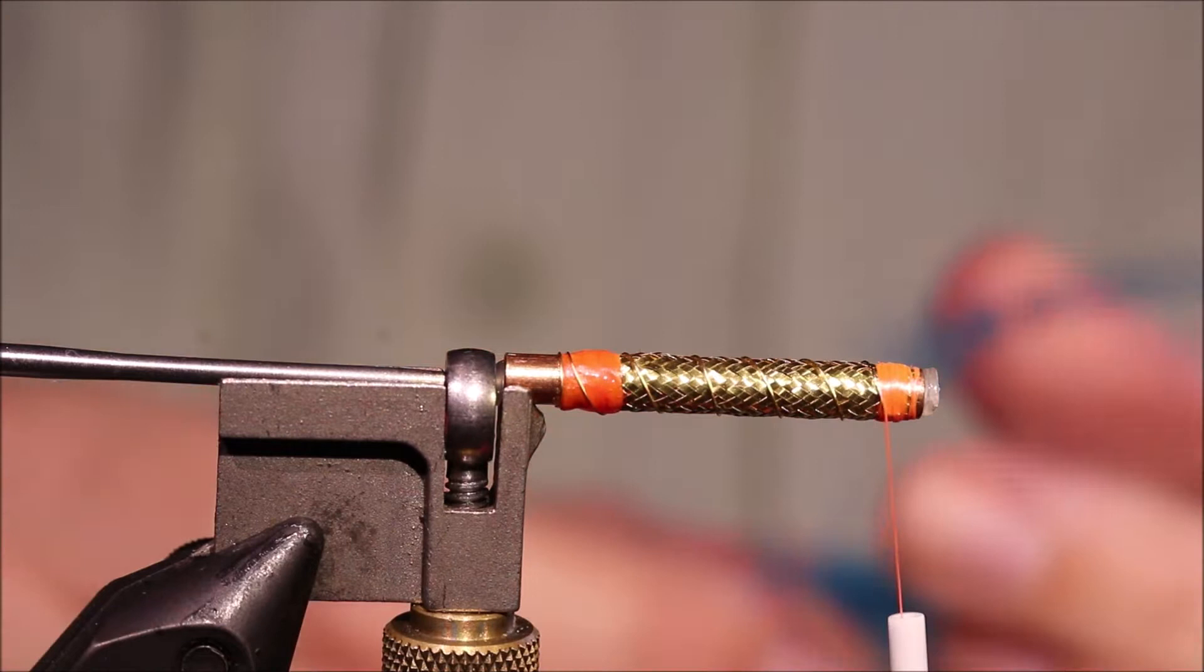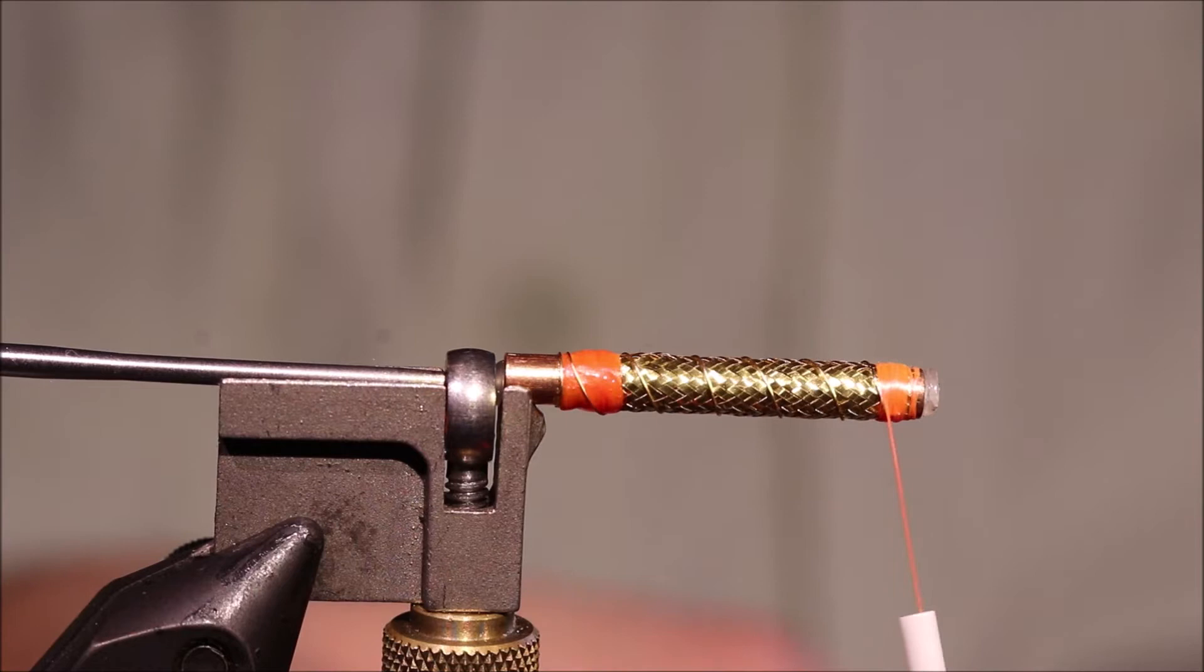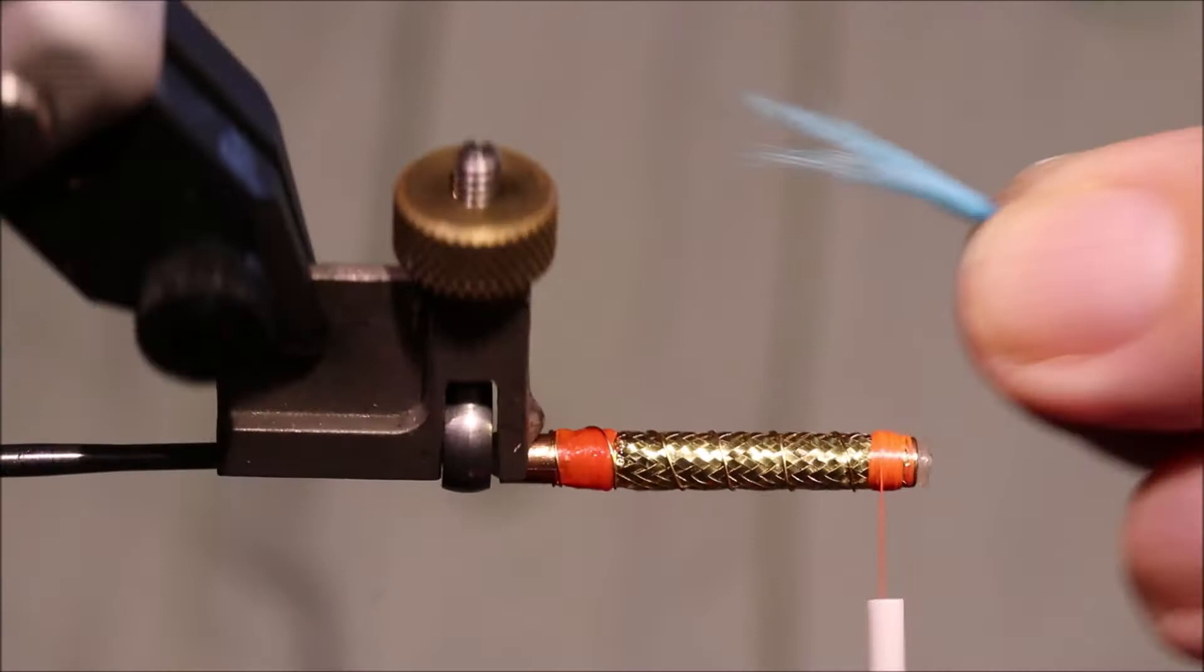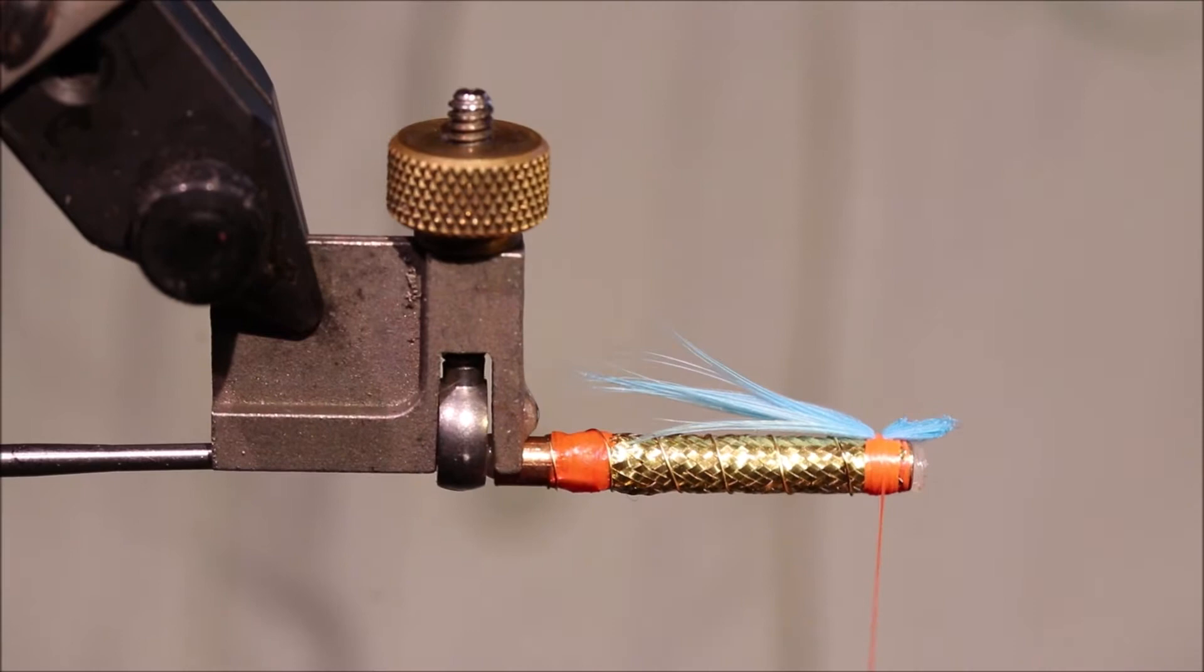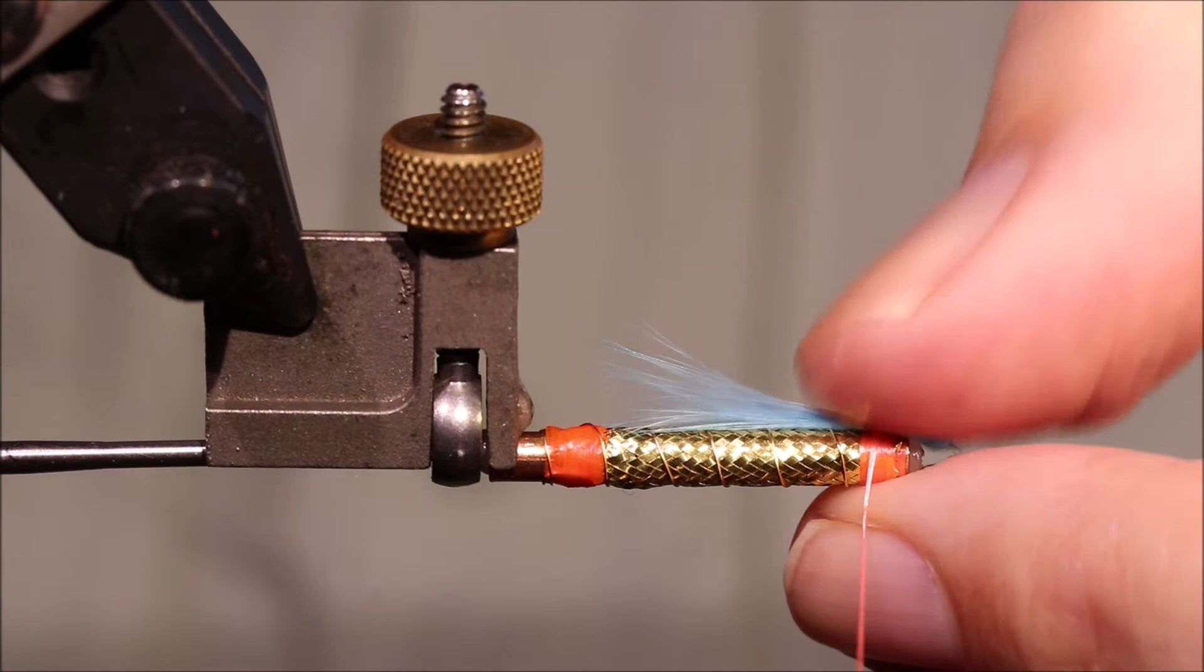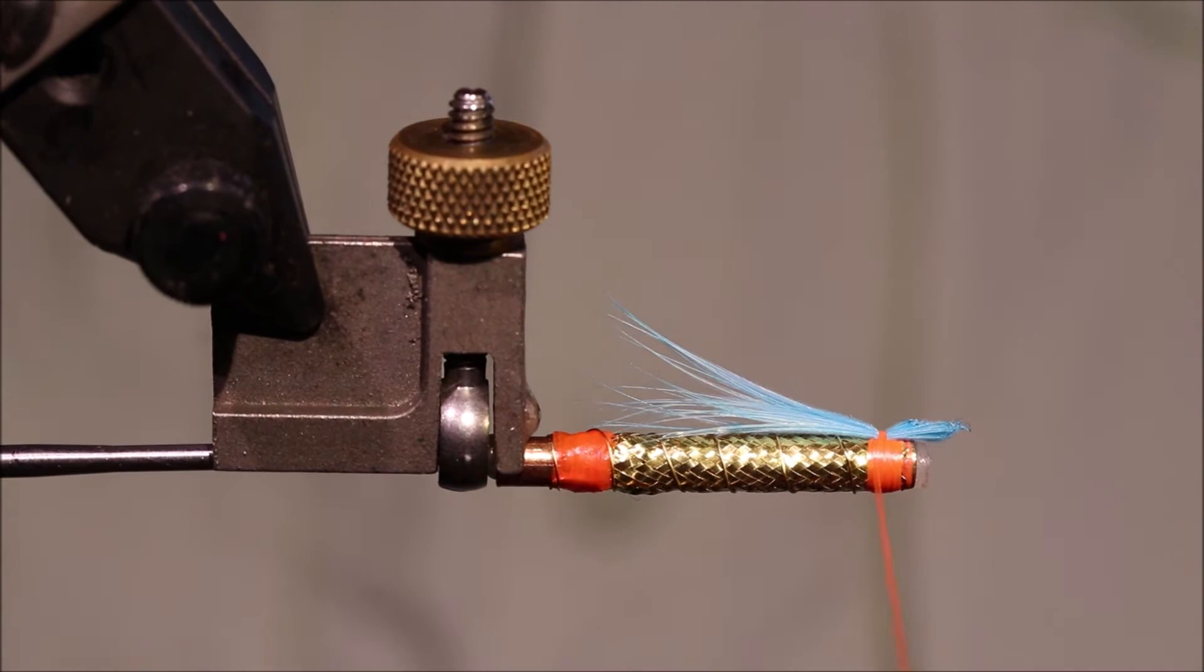Now the pattern I have for this fly calls for blue kingfisher blue hackle fibres for the throat. But I've also seen it tied with bucktail and arctic runner. Up to you really what you use, as long as you've got that colour in there. So I'm going to take a nice wee bunch of kingfisher blue. Just do it on the underside. It's just Chinese hackle. I'm going to sort of encourage them to be a bit wide.